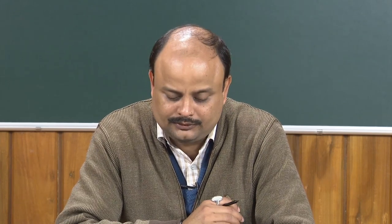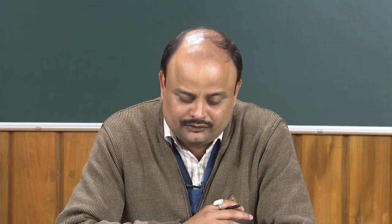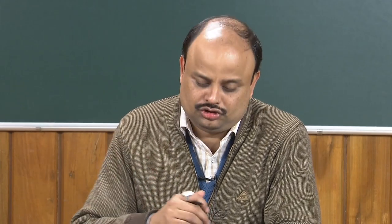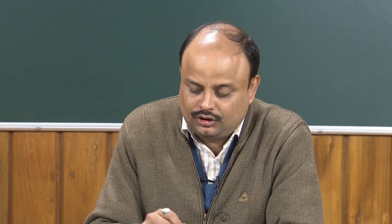Pneumatic conveying is widely used in many industries to convey solids from one place to another, particularly when the solid cannot be conveyed through a belt — for example, when the solid would degrade or emit something to the atmosphere in open media. Pneumatic conveying is the transportation of dry material through a pipeline using air or gas as a motive force. Mostly it is compressed air or air at lower pressure, depending on the energy required. Sometimes it is flue gas from a boiler used to transport ash from the combustor to another location. If liquid is used instead of air or gas, it is called hydraulic conveying.